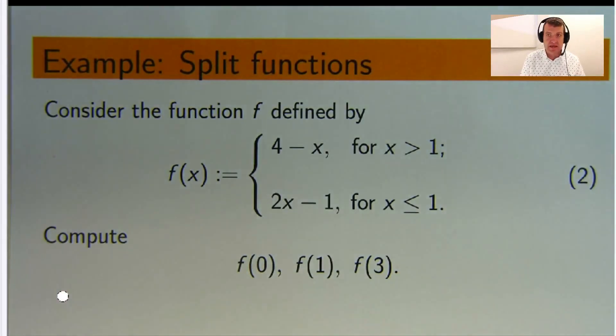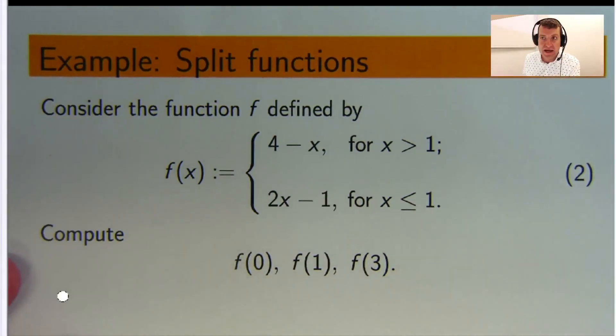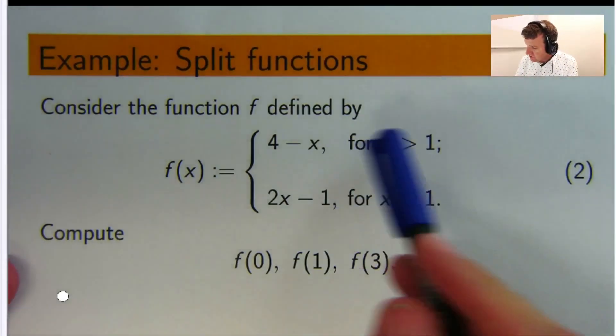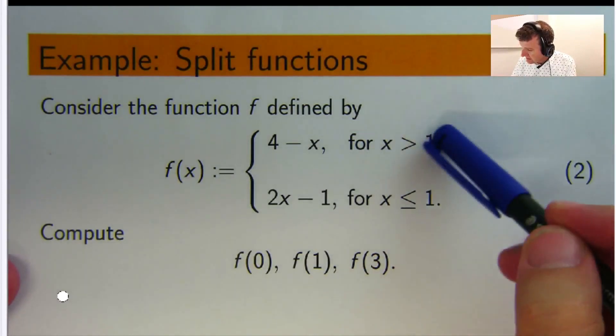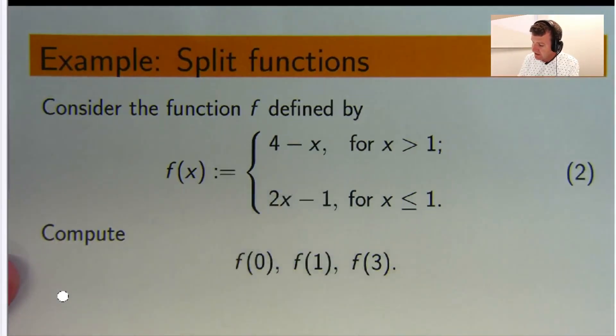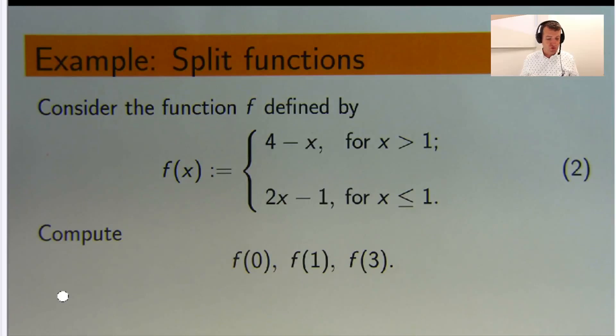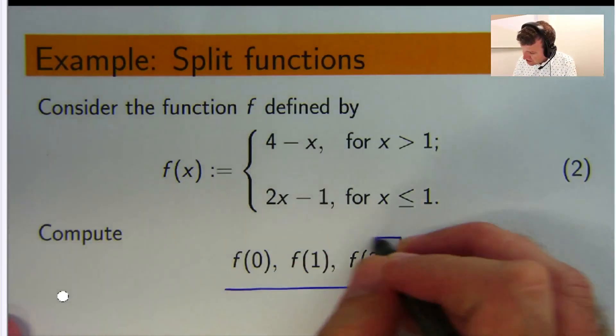Alright, this is a pretty simple example. Consider the function f defined in this kind of split or piecewise way. To the right of 1, the function is 4 minus x. And to the left of 1, including the point 1, the function is 2x minus 1. Now you can draw a picture, but it's not necessary. I'll just do the algebra first and then maybe I'll draw a picture in a minute. So we're asked to compute 3 values. When x equals 0, when x equals 1, and when x equals 3, we want to calculate the values of our function.